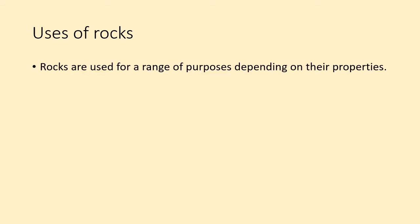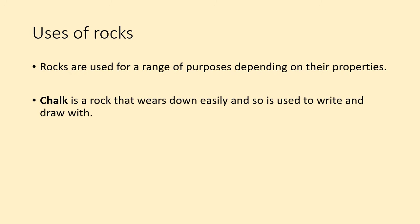Rocks have a wide range of uses or purposes depending on their properties. Properties just means words that we can use to describe the rock. For example, chalk is a rock that wears down easily — whenever you rub chalk on a surface, part of the chalk stays behind, and that's why chalk can easily be used to write and draw with.